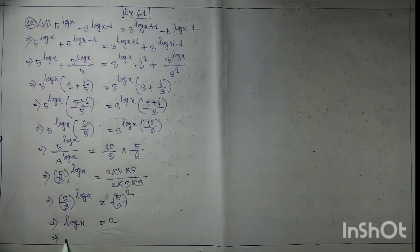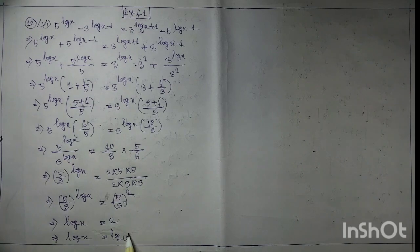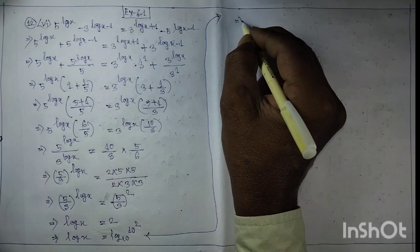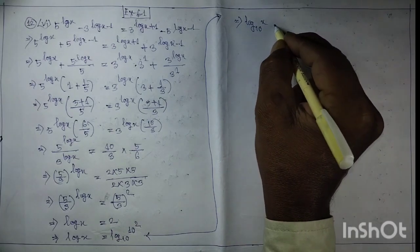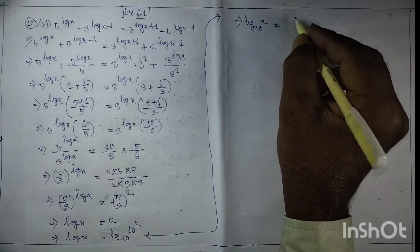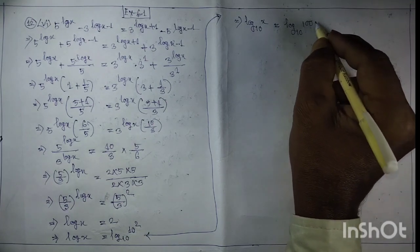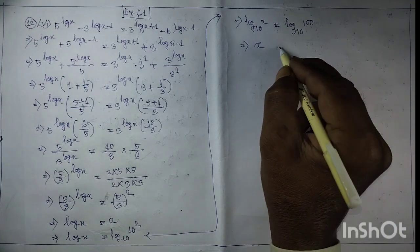Implies log x equal to log n squared, that is log x to the base 10 equal to log 100 to the base 10. Implies x equal to 100.